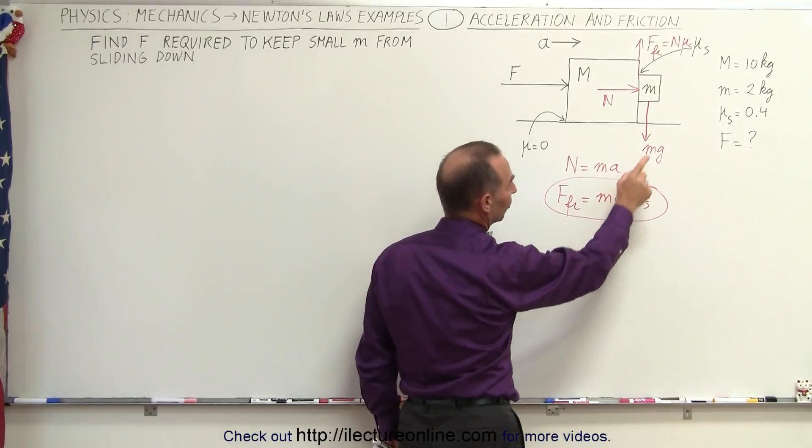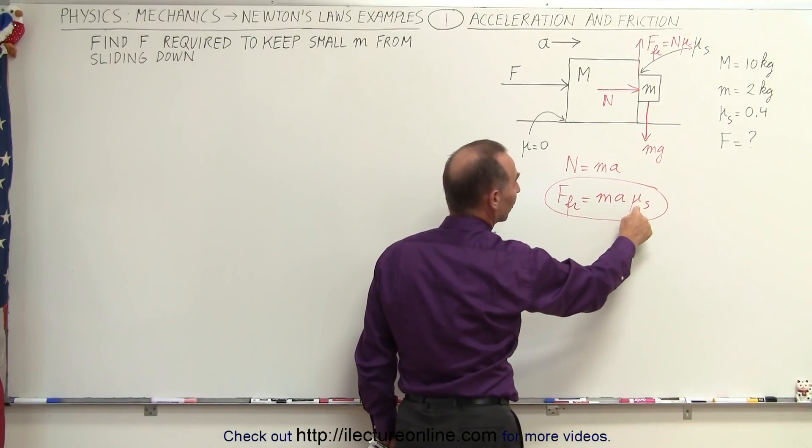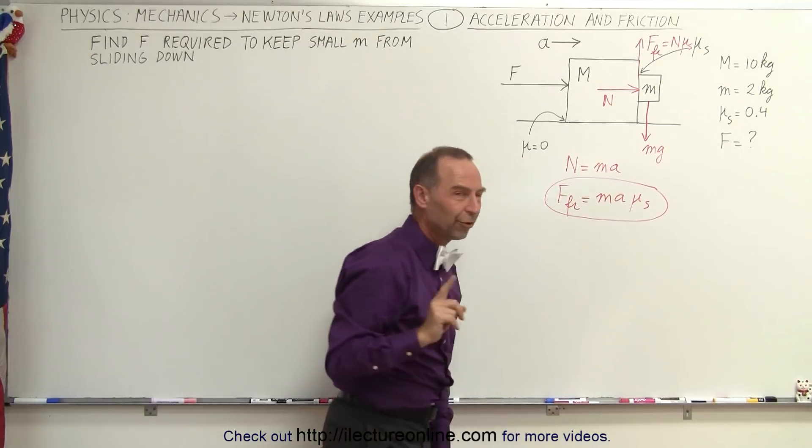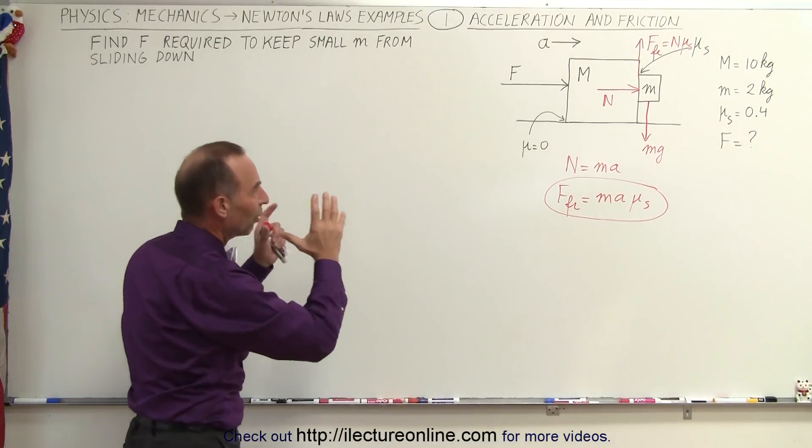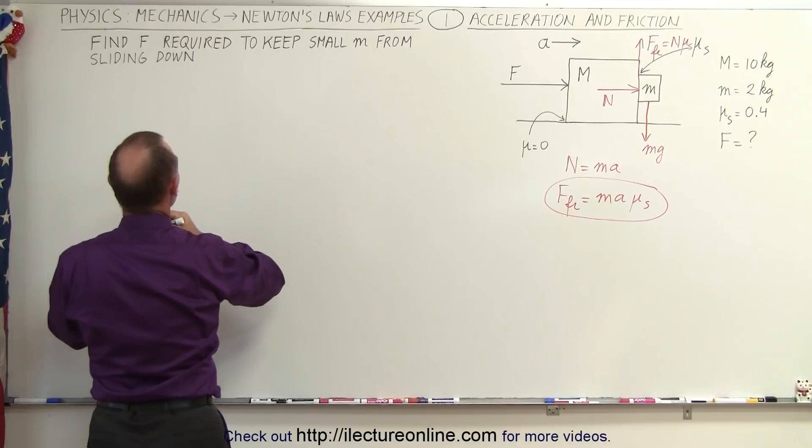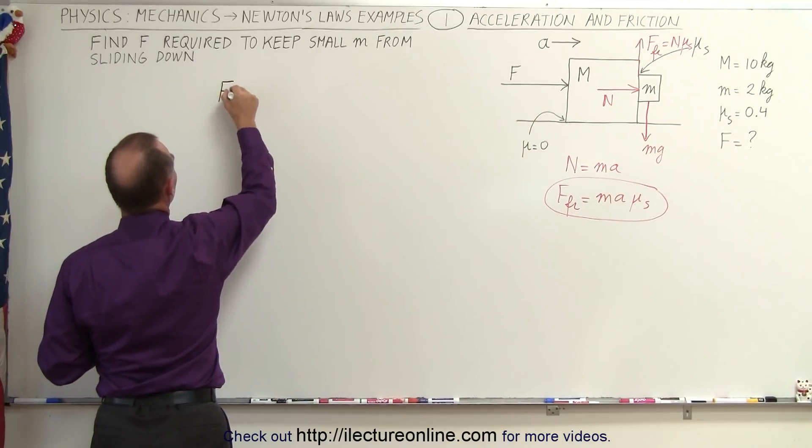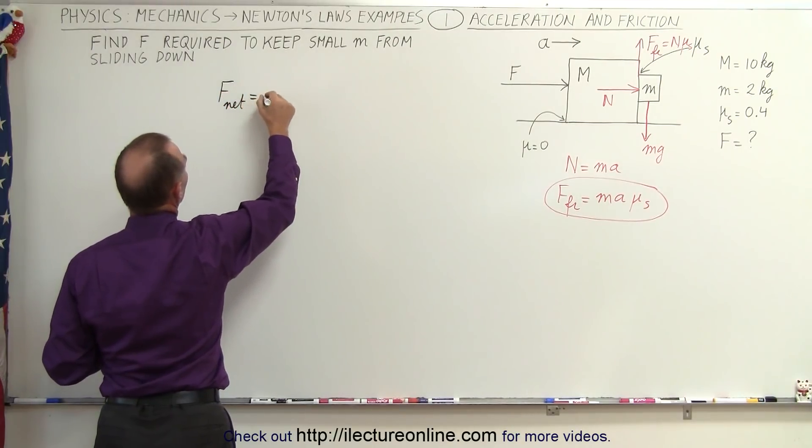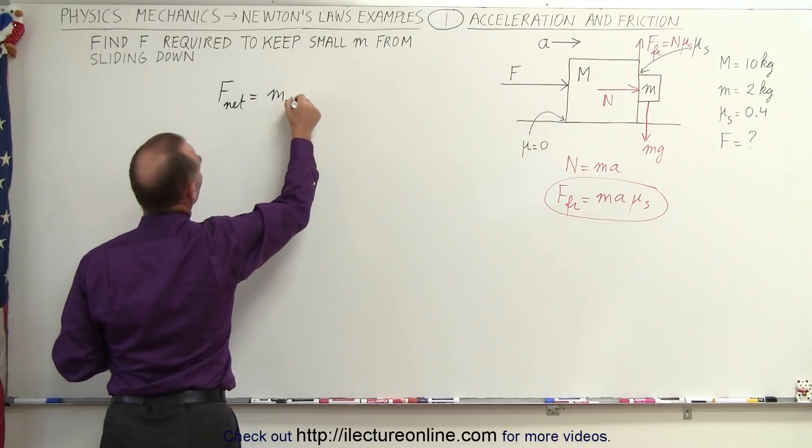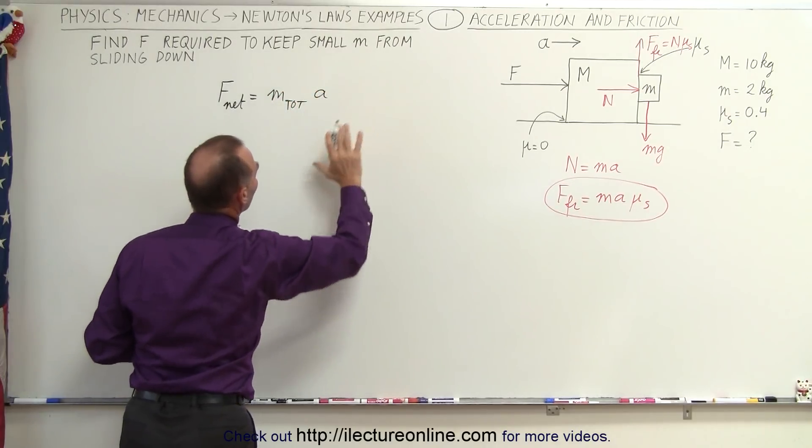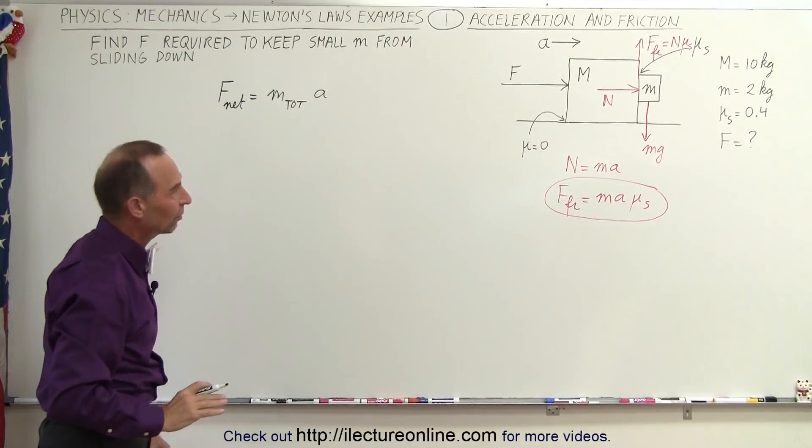So what we don't have here, because we do have the mass, and we do have the coefficient of static friction, we don't have the acceleration. So we first have to figure out what the acceleration is of the whole system. So here we can say that F net equals the mass total times acceleration of the whole system. And this would be the total mass of the system.